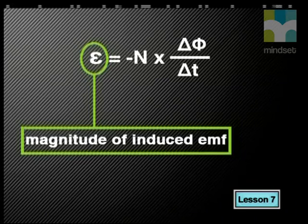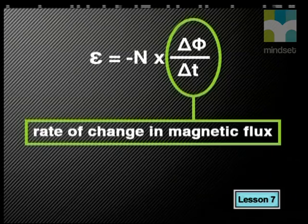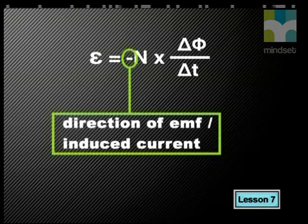Let's have another look at the complete equation. E stands for the induced EMF, N stands for the number of turns in a coil, and delta phi over delta T stands for the rate of change in magnetic flux. The negative sign in front of N indicates the direction of the EMF and of the induced current. From this equation, we can say that the induced EMF or current has the opposite sign compared to the rate of change in magnetic flux. A positive or negative sign are often used to indicate direction, so in this case the induced EMF or current is in the opposite direction to the change in magnetic flux.